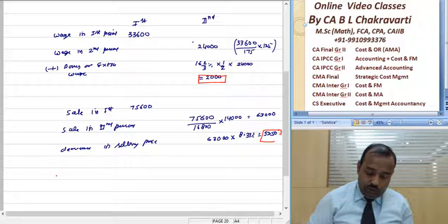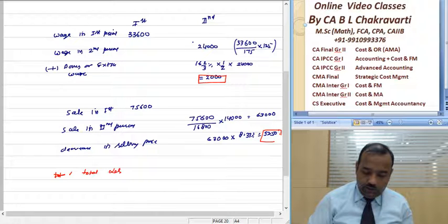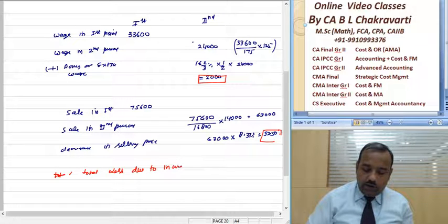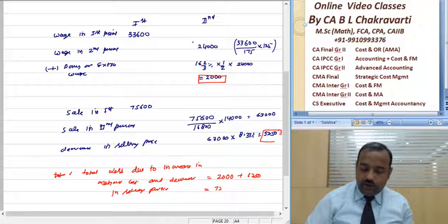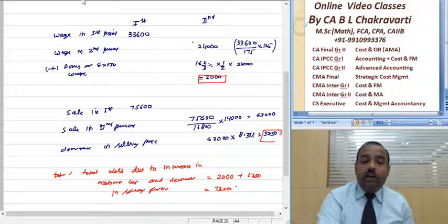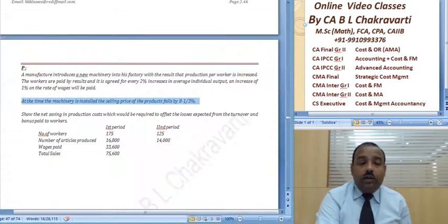Basically, total loss due to increase in labor and decrease in selling price: 2,000 plus 5,250 loss, equals 7,250. This is our loss.